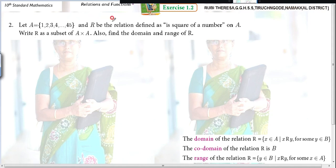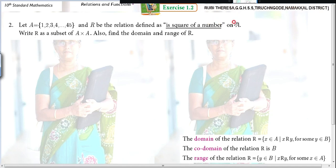And let R be the relation defined as: E is the square of a number on A. Write R as a subset of A cross A. Also, find the domain and range of R.